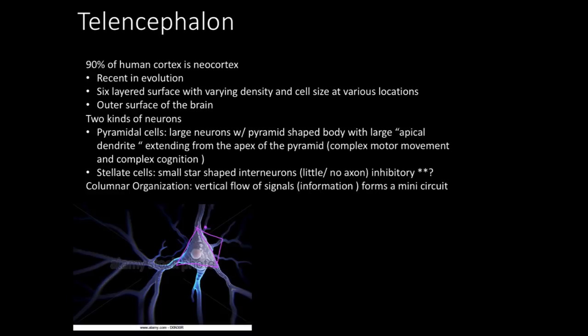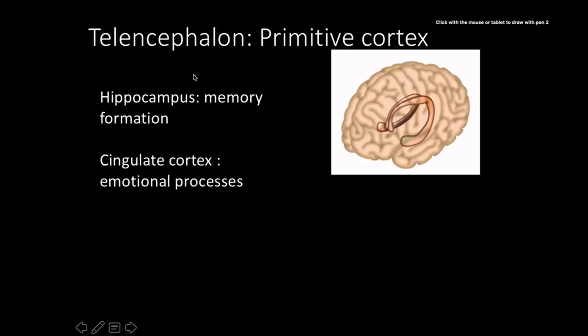Advancements in cognitive abilities and motor skills reflect advancements in the underlying neural circuitry. Stellate cells are small, star-shaped interneurons with essentially no axon, possibly serving an inhibitory function. The columnar organization of the cortex represents an advanced form of circuitry that gives rise to fine motor movement — enabling tool-making, surgery, and art.